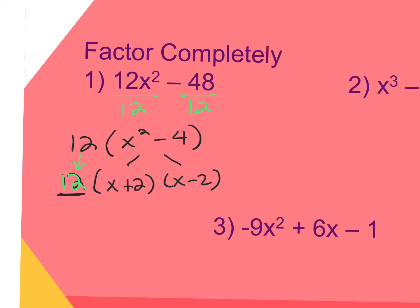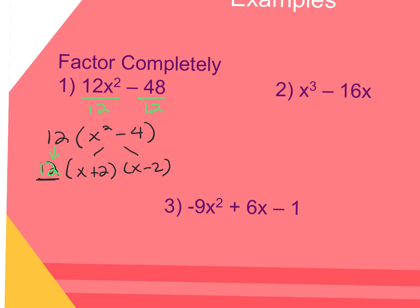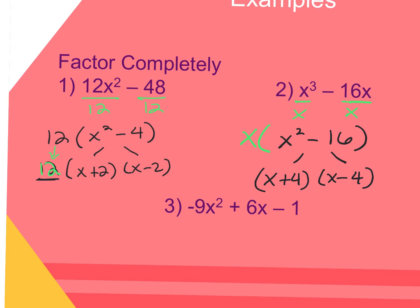For number 2, look for a greatest common factor first. Notice on the first problem there were no variables in common, but on number 2 the only thing they have in common is the variable x. After dividing, what remains is x squared minus 16 — again the difference of two squares — so I have to keep going. This factors into x plus 4 and x minus 4. Don't forget about the GCF; it needs to keep coming down in front of your final answer.